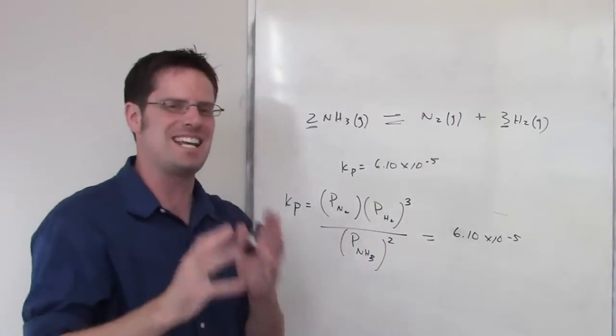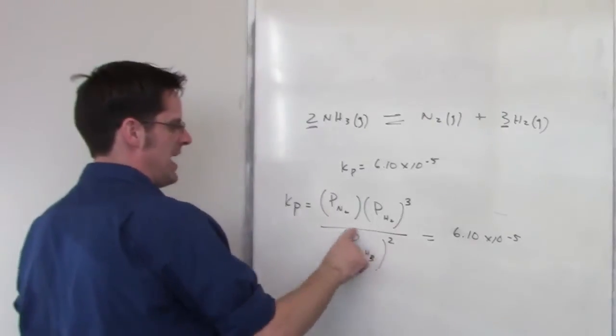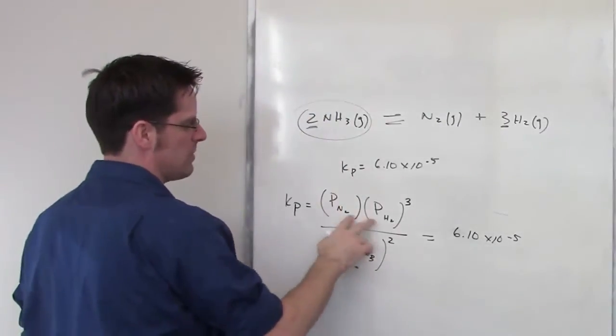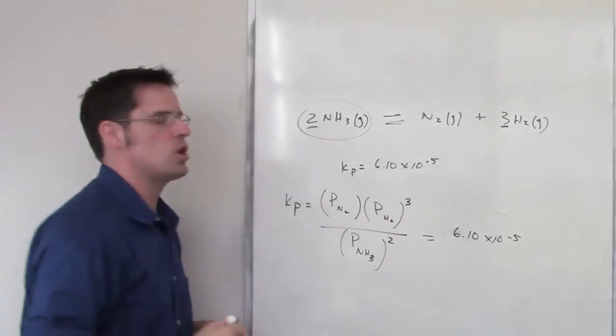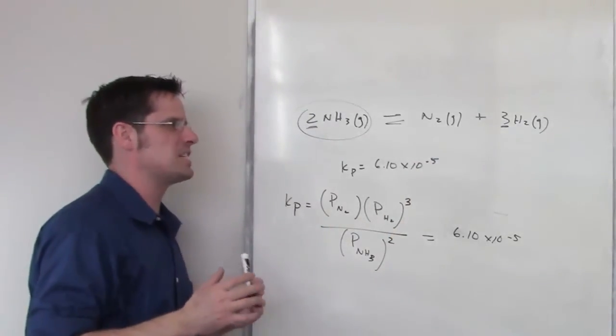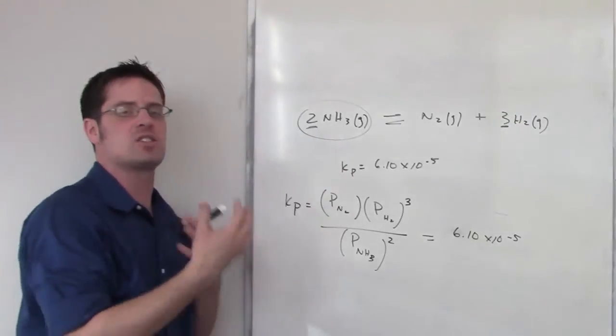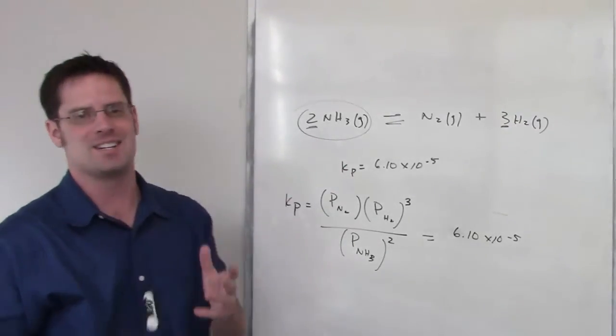So that tells us that at equilibrium, the amount of NH3 is going to be much, much larger than the combined amounts of the products, N2 and H2. So the correct answer to this question is we're going to get a dominant amount of NH3 with some small amounts of N2 and H2.